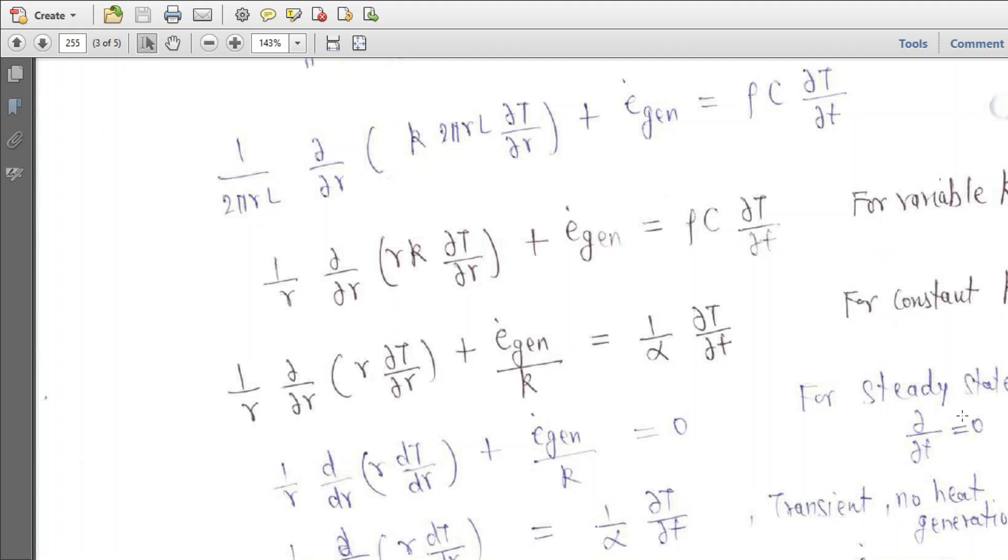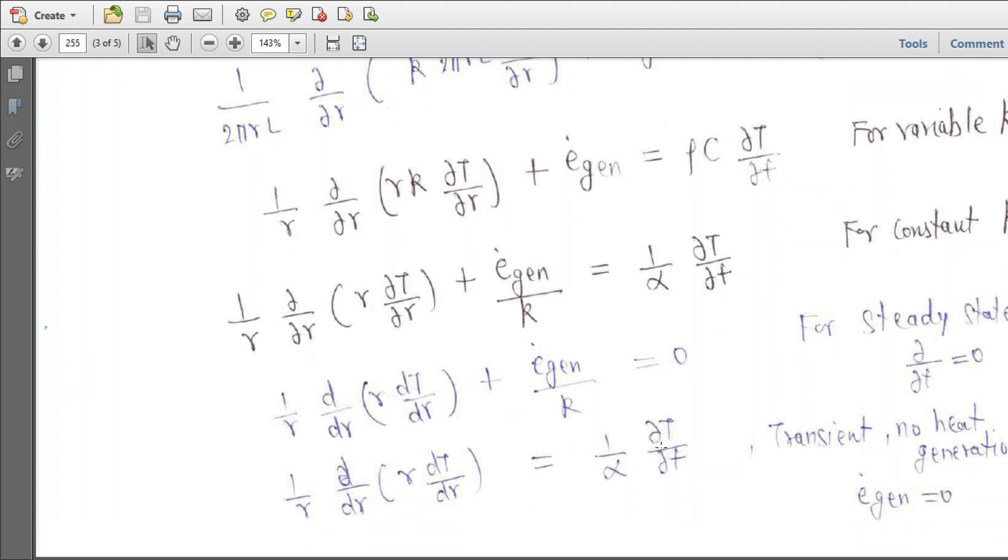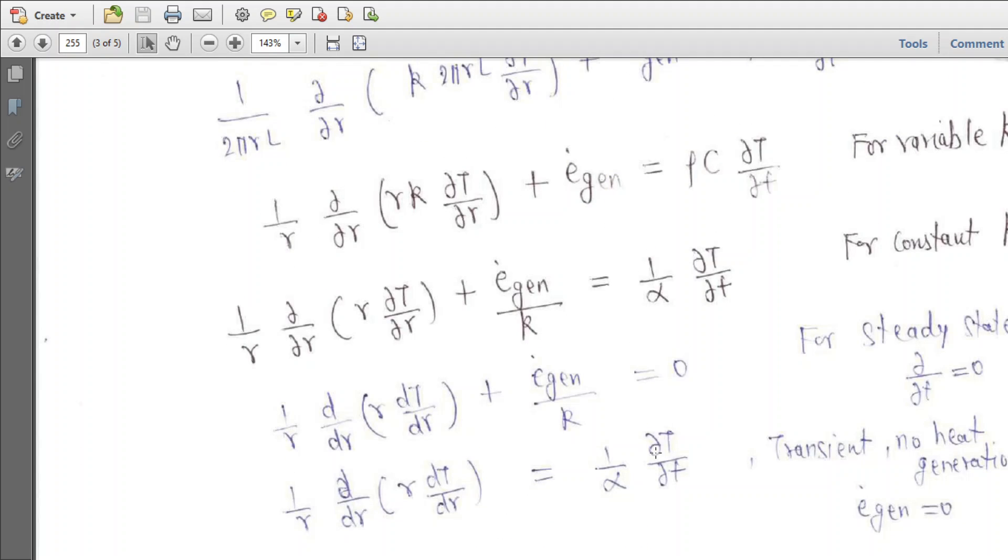For steady state, the time derivative is zero. For transient with no heat generation, the Ė_gen term vanishes, so you have (1/R)(d/dR)(R·dT/dR) equals (1/α)(∂T/∂t).